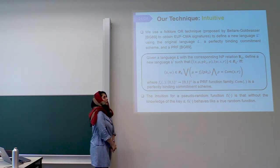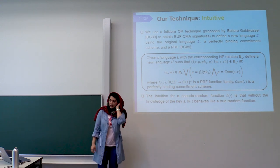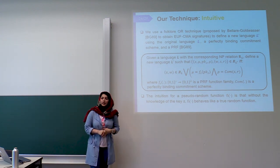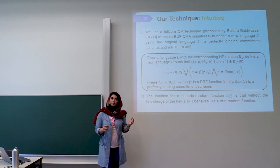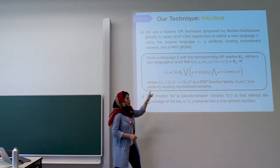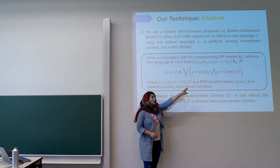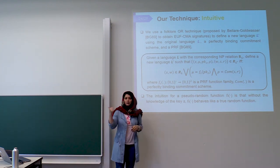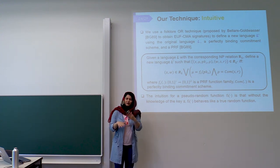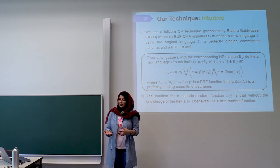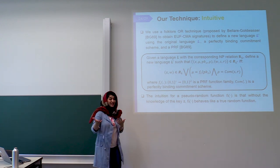In our scheme, we use a folklore technique proposed by Bellare and Goldwasser in 1989. They proposed a technique for unforgeable signatures using zero knowledge proofs, pseudorandom functions, and perfectly binding commitments. We are using the same approach since our goals are similar — they wanted to make their signatures non-malleable and unforgeable. They wanted to show that if a signer has seen an arbitrary number of signatures, a dishonest prover still cannot provide a valid signature.